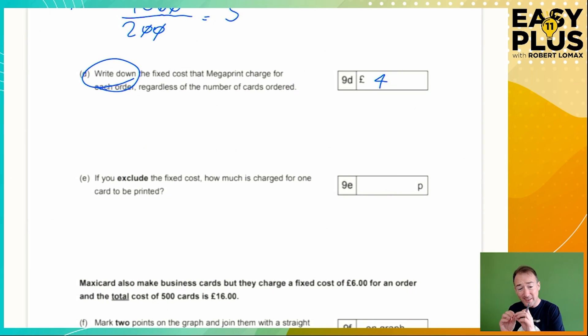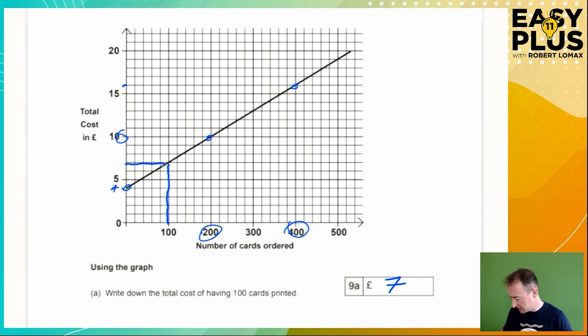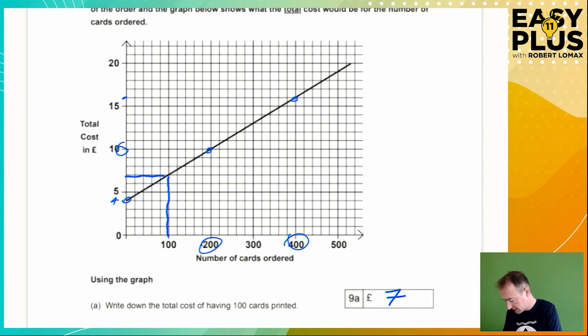If you exclude, so that means leave out, the fixed cost, how much is charged for one card to be printed? So we look at the chart here, and if we go to one card, that doesn't really work, does it? Because how can we find out what's exactly one hundredth of the way between there and there? It isn't going to happen. Let's clear a bit of space so we've got room to work with.